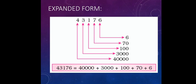By expanding using place value, we get it as 40,000 plus 3000 plus 100 plus 70 plus 6.